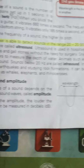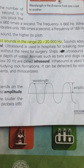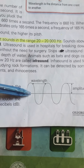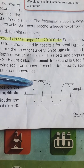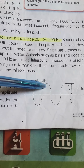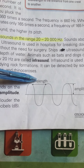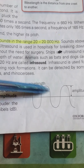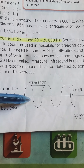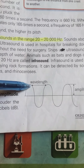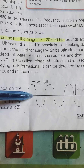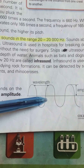First of all, look at the picture. You can see the difference between wavelength and amplitude. The wavelength is the distance from one crest to another crest — the distance between two crests is our wavelength. Here is the amplitude of sound: it is the distance from one crest to the middle line.